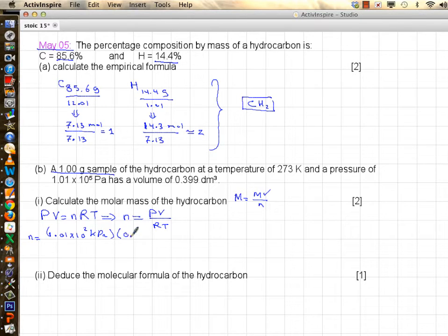Volume is 0.399 decimeter cubed—no need to change it. It's the same as our gas constant. Gas constant in IB for us doesn't change: 8.314, except instead of joules we put kilopascal times decimeter cubed divided by mole divided by Kelvin, times temperature which they gave us as 273 Kelvin.